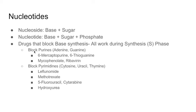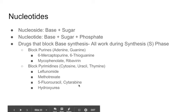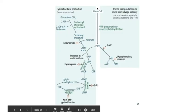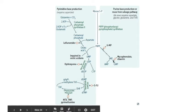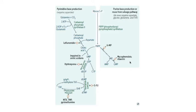You can have drugs that block purines: 6-mercaptopurine and 6-thioguanine. You can also have mycophenolate and ribavirin. Drugs that block pyrimidines include leflunomide, methotrexate (indirectly), 5-fluorouracil, cytarabine, and hydroxyurea. This schematic from First Aid shows where different drugs work in the pyrimidine and purine synthesis cycle — whether it's leflunomide, methotrexate, 6-mercaptopurine, mycophenolate, or ribavirin.